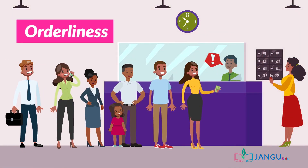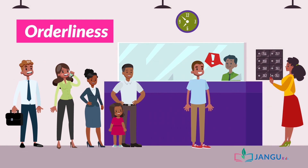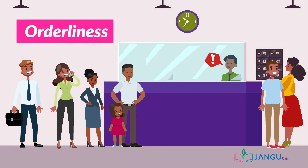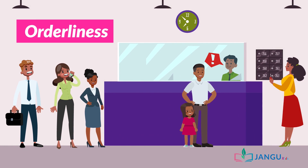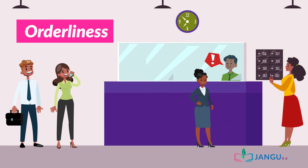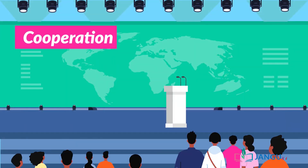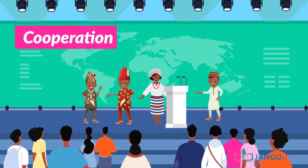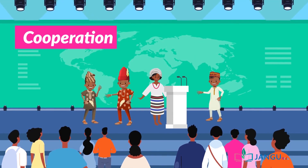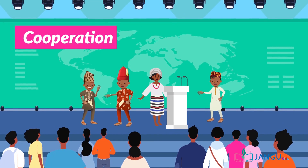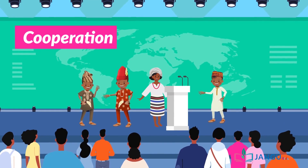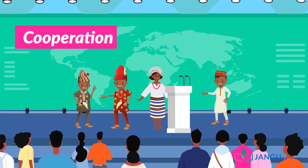Orderliness — members of the community must carry out their day-to-day activities in an orderly fashion. They must be calm, organized, and peaceful.